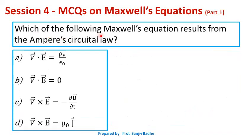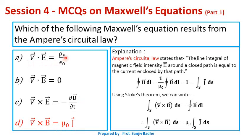Next one: which of the following Maxwell's equations results from Ampere's circuital law? The options are: divergence of E bar equals rho_V by epsilon naught (first equation, based on Gauss's law for electric field); divergence of B bar equals 0 (second equation, based on Gauss's law for magnetic field); curl of E bar equals minus del B bar by del t (third equation, based on Faraday's law); and curl of B bar equals mu naught J bar (fourth equation, based on Ampere's circuital law). So option D is correct.